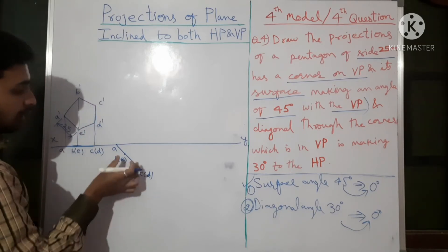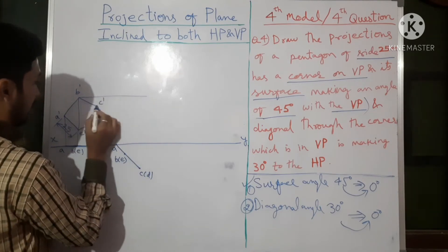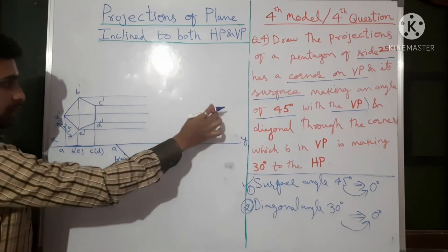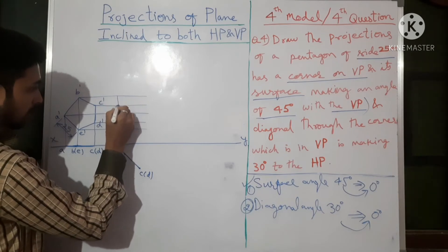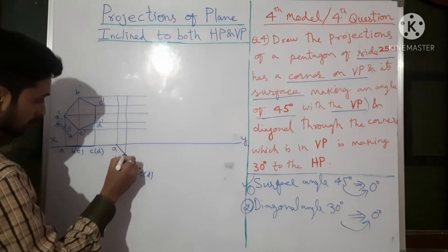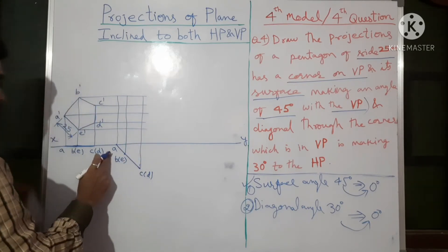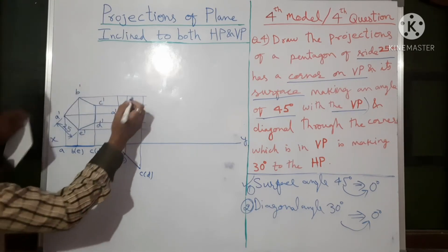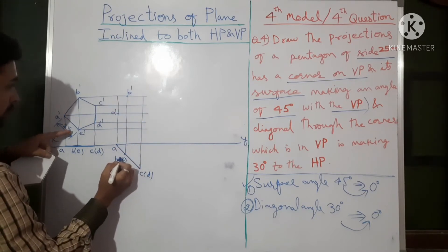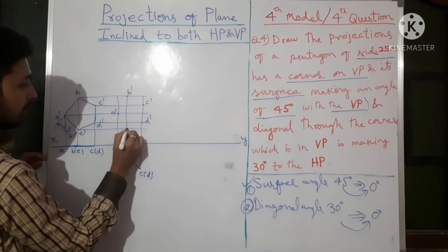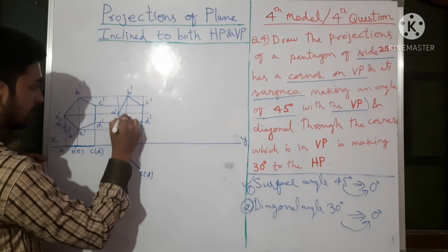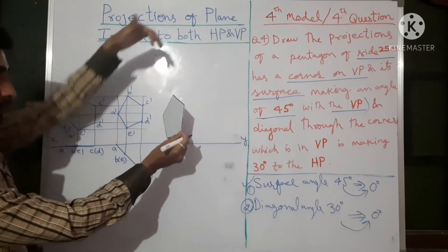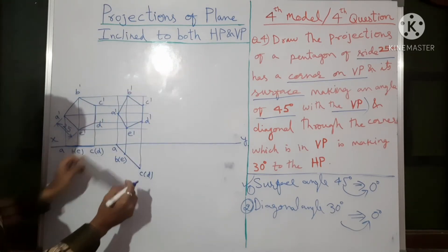Surface is making 45 degrees with VP, so in the top view the line will be at 45 degrees, and in the front view the shape of the pentagon will get reduced. Measure this length and draw the same length at 45 degrees. This gives point C (bracket D) and point A. Mark point B near A. Then project these points upward for the front view and take them horizontally. Projector lines should be thin and continuous; all front and top views should be dark.